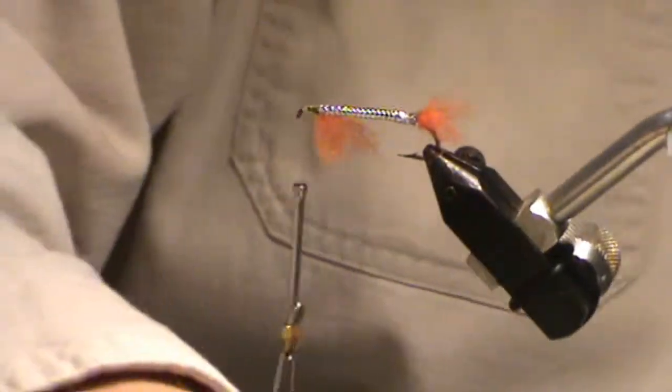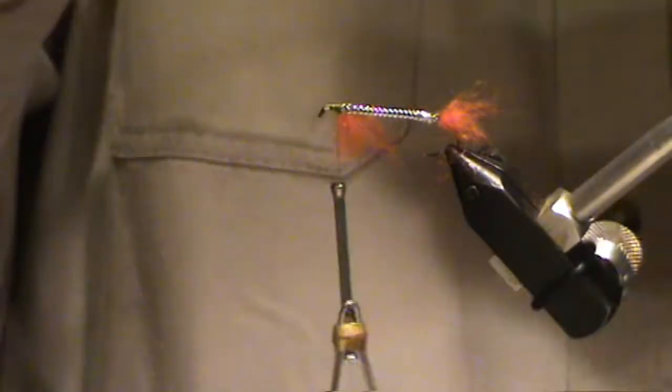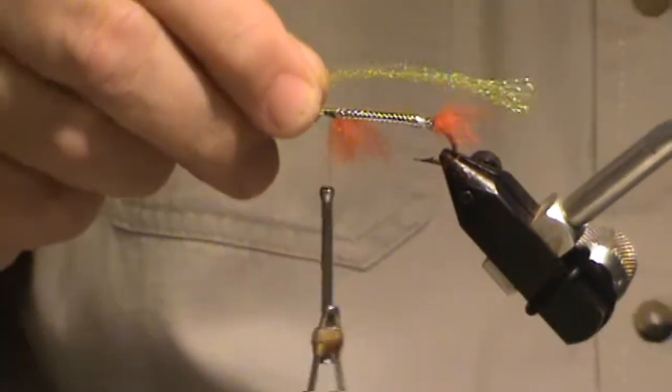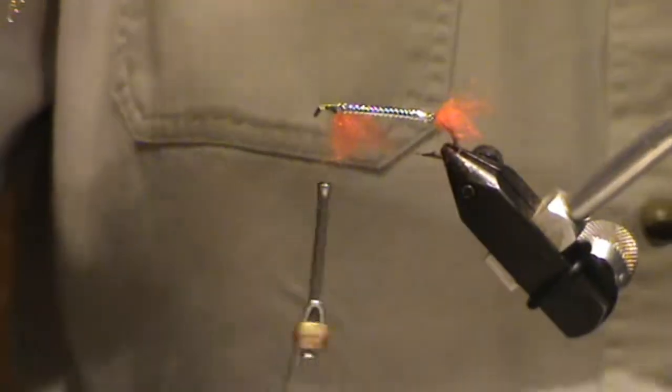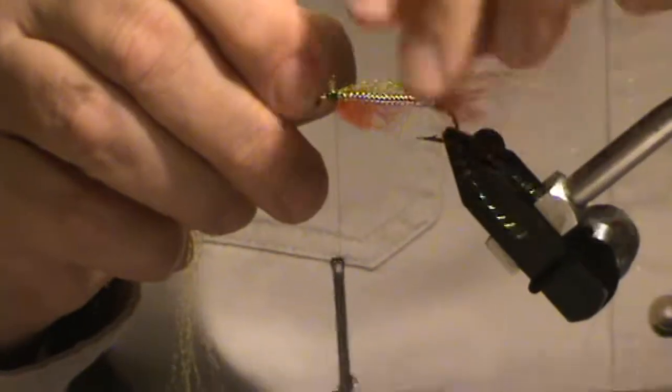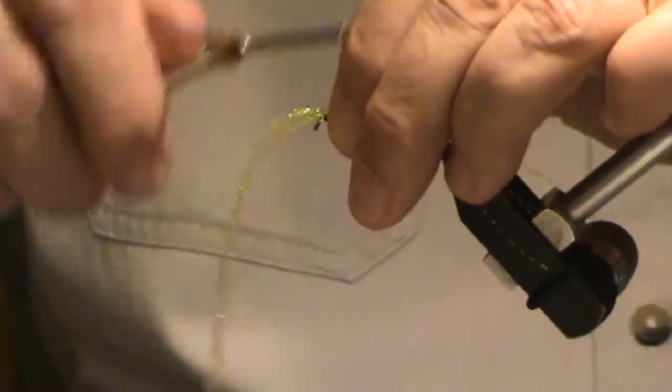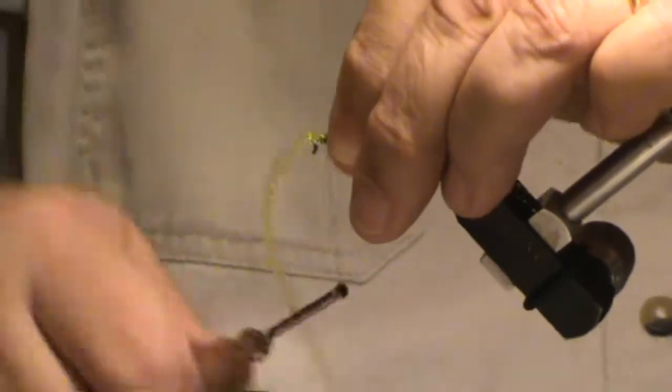Take some crystal flash. It's supposed to be a yellow perch, so... Lost a strand there. Okay. Here we go. Like that. Two. Three. Wrap it forward a few turns.